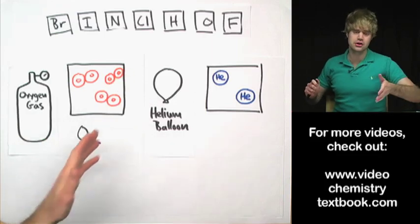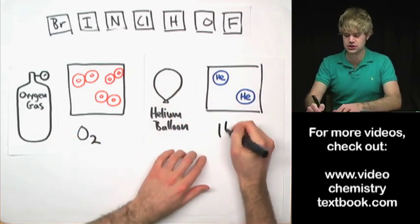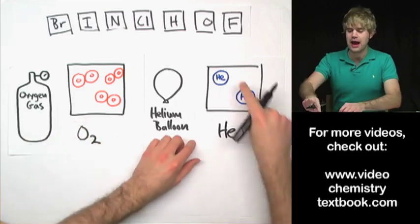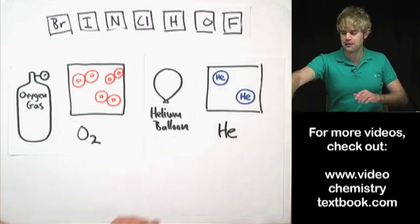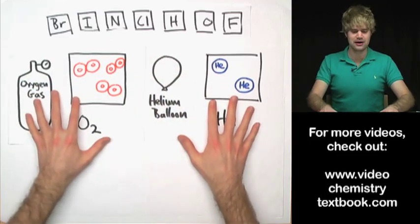But on the other hand, if someone says write the chemical formula for the helium gas in the balloon, it's just HE. It's not HE2 or anything. It's just HE and that's because the helium atoms are by themselves, one at a time in helium.